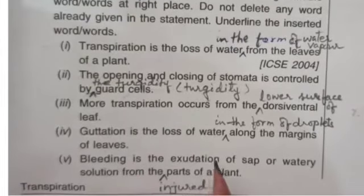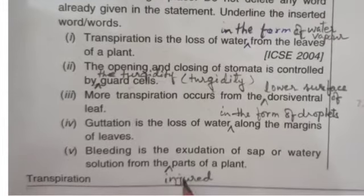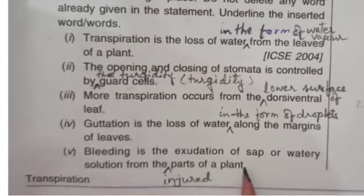Fifth: bleeding is the exudation of sap or watery solution from the injured parts of the plant.